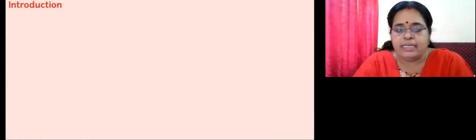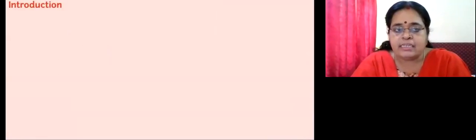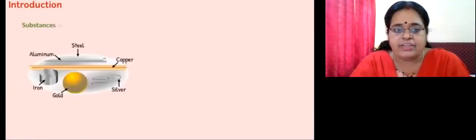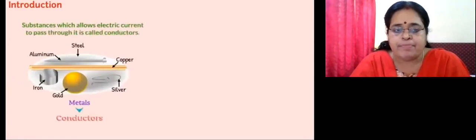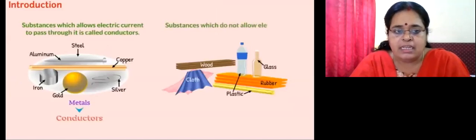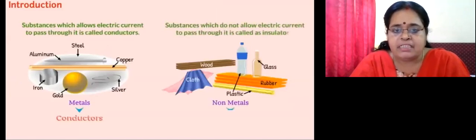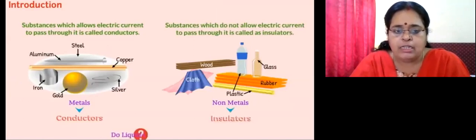Our chapter for today is the chemical effects of electric current. Substances which allow electric current to pass through them are called conductors — like aluminium, steel, and copper. Substances that do not allow electric current to pass through them are called insulators or non-conductors.